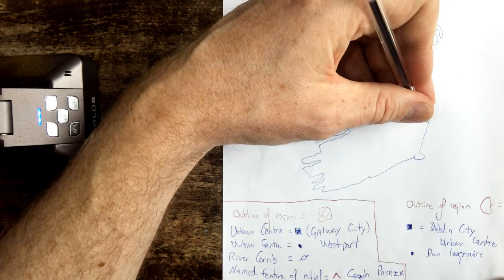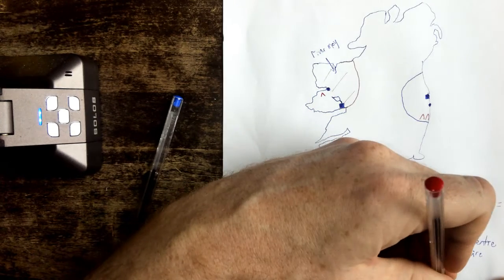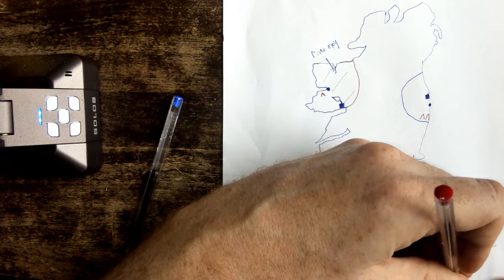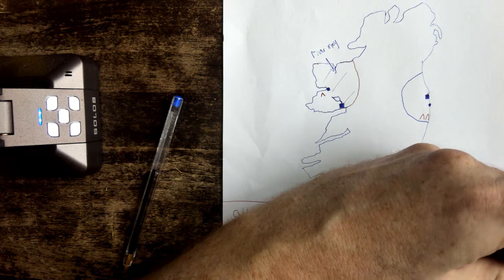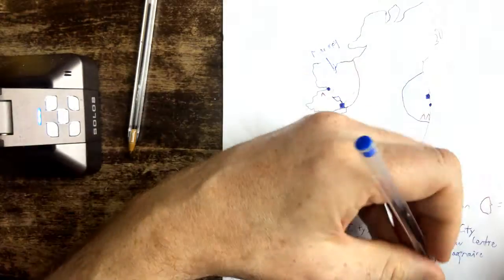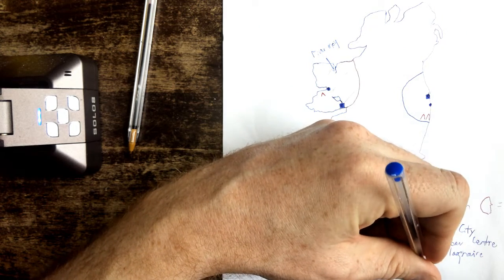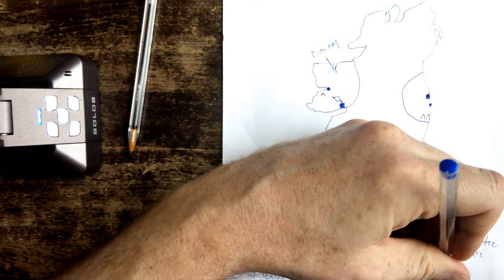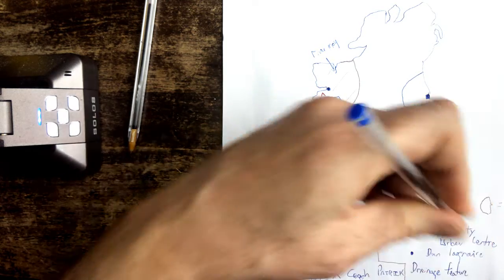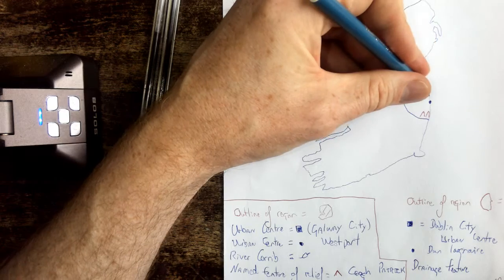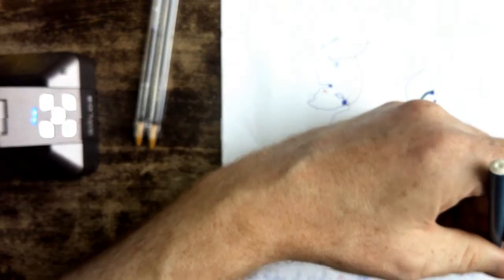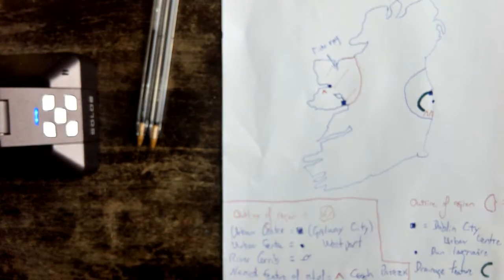And next I'll find my mountain range and my named feature of relief. Meath, Kildare, Wicklow Mountains. And my drainage feature or river, I'll either come up as drainage feature or river, and the drainage feature is we will go with the Liffey flowing out here and heading into the Dublin mountains. We'll call that river Liffey.